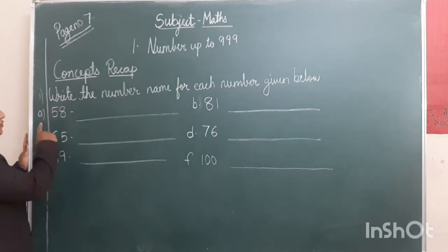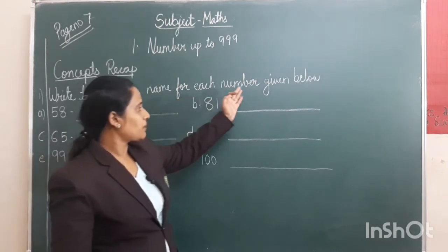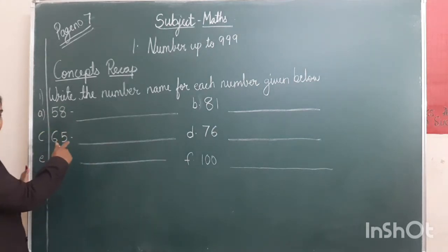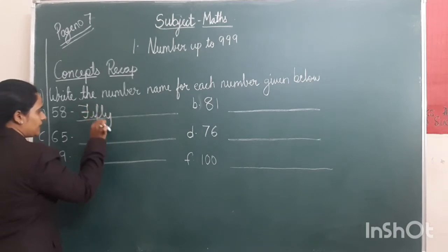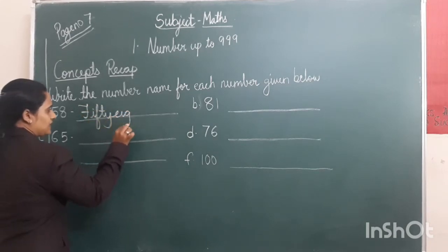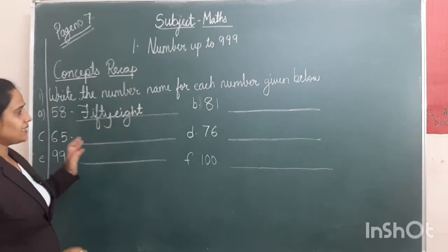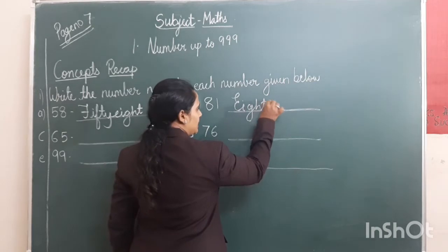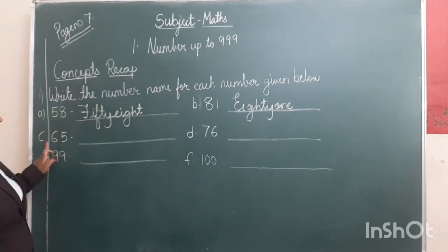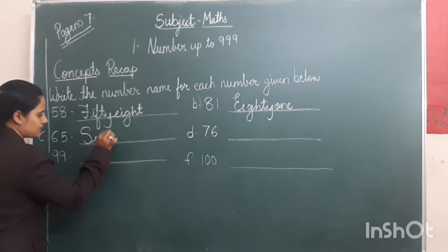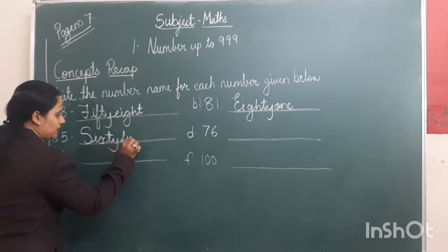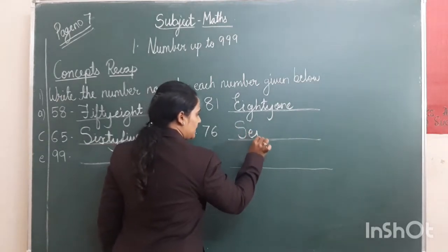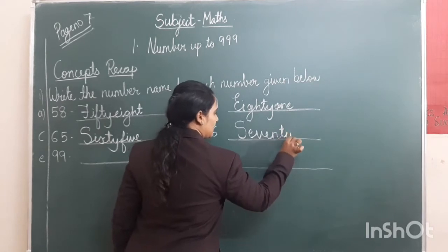Page number 7. First question: write the number name for each number given below. In this you have to write the number name. First is 58 — you have to write FIFTY EIGHT. Second is 81 — EIGHTY ONE. 65 — SIXTY FIVE. 76 — SEVENTY SIX. Touch the line and write in cursive.